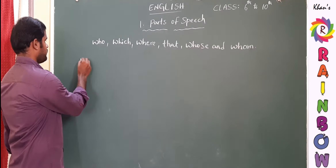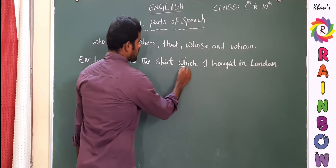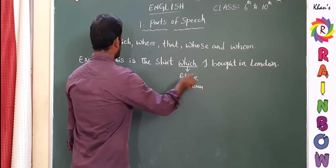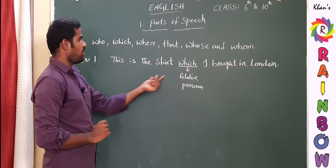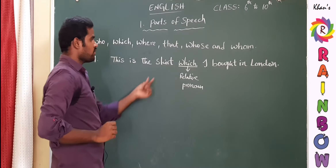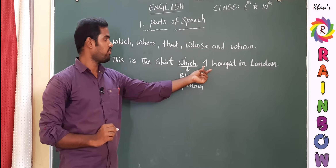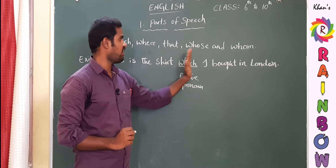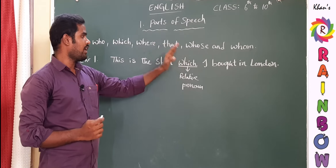Example one: 'This is the shirt which I bought in London.' Here 'which' is the relative pronoun. Observe the first half: 'This is the shirt' — shirt is the noun. I placed the relative pronoun 'which' after the noun shirt: 'which I bought in London.' What did I buy in London? Shirt. So 'which' stands for the shirt. The relative pronoun adds extra information about the noun before it. This is exactly the definition — relative pronouns stand for the nouns before them.